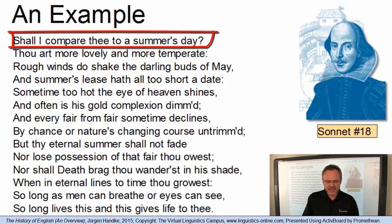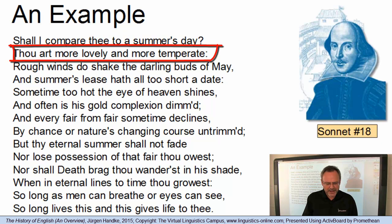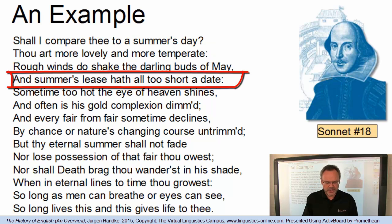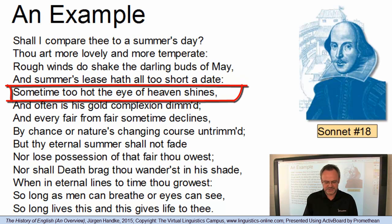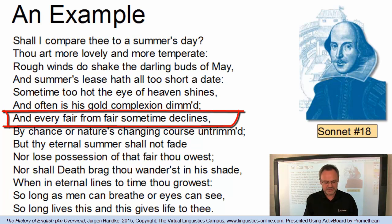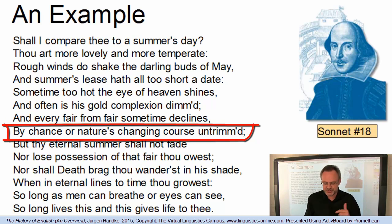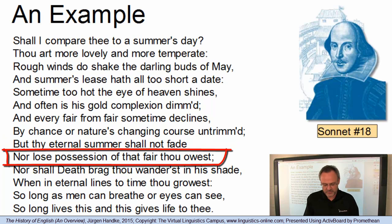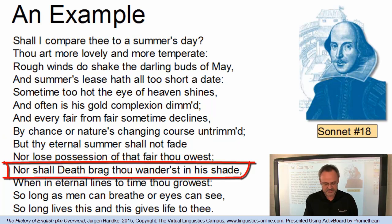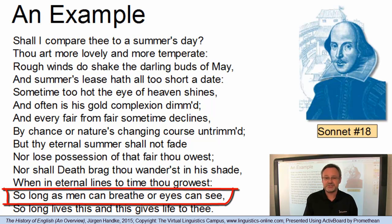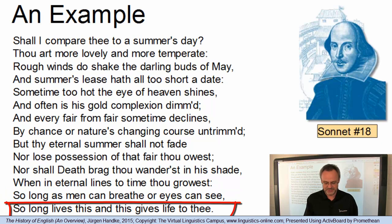Here is Sonnet number 18: 'Shall I compare thee to a summer's day? Thou art more lovely and more temperate. Rough winds do shake the darling buds of May, and summer's lease hath all too short a date. Sometime too hot the eye of heaven shines, and often is his gold complexion dimmed, and every fair from fair sometime declines, by chance or nature's changing course untrimmed. But thy eternal summer shall not fade, nor lose possession of that fair thou hast, nor shall death brag thou wand'rest in his shade, when in eternal lines to time thou grow'st. So long as men can breathe or eyes can see, so long lives this, and this gives life to thee.'